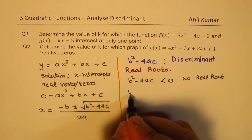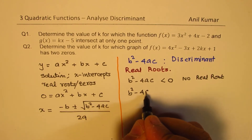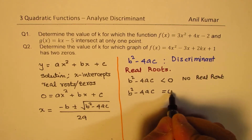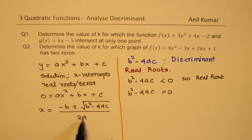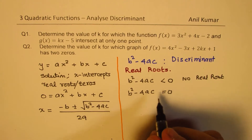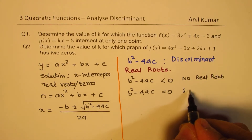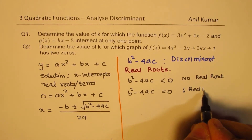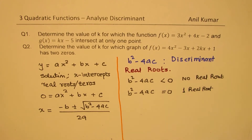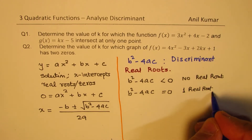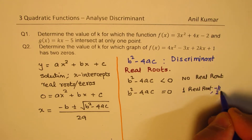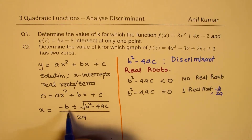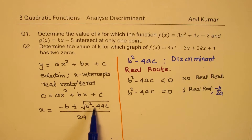If b² − 4ac equals 0, then ± 0 gives only one term, which is −b / 2a. So in that case we get one real root. The value of that real root will be at x = −b / 2a, meaning there is only one root.